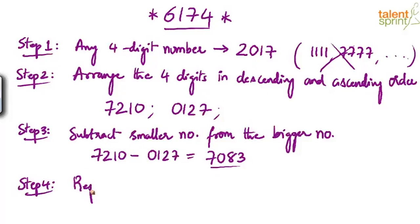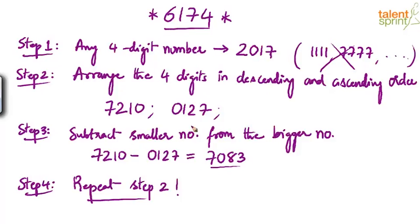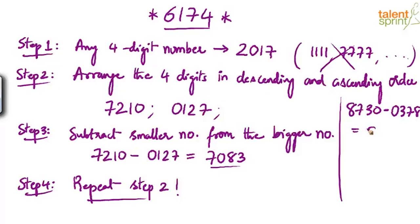Step four: go back to step two and repeat the process using this new number. Taking 7083, we arrange its digits to get 8730 minus 0378, which gives 8352. Then taking 8352, we arrange its digits to get 8532 minus 2358, and the result is 6174.